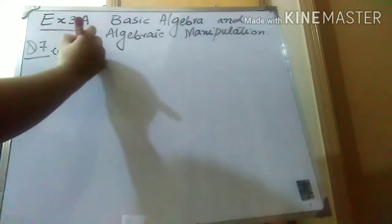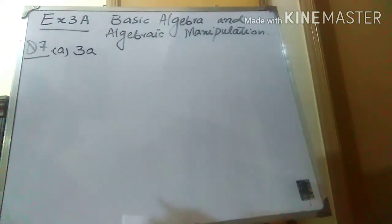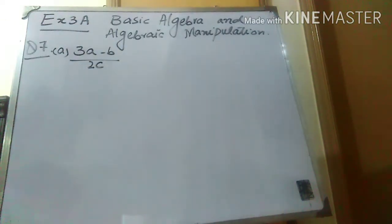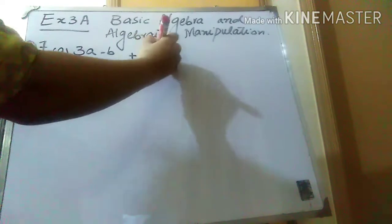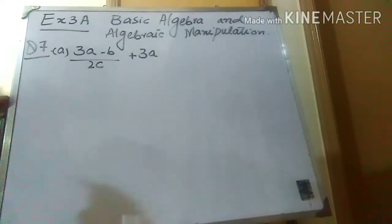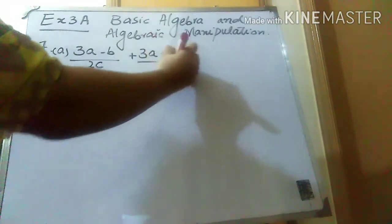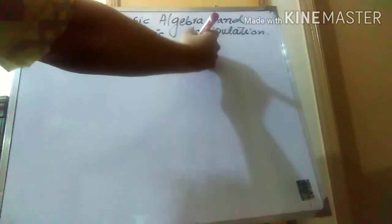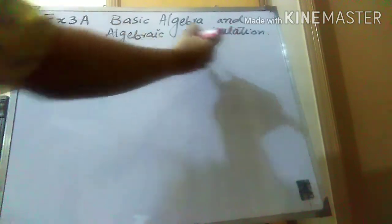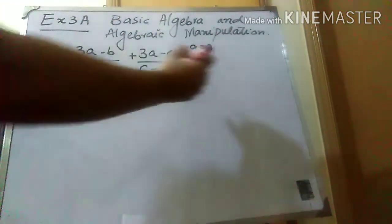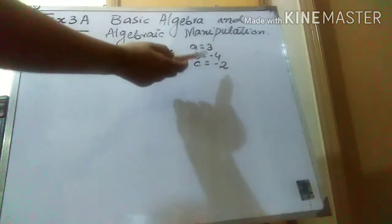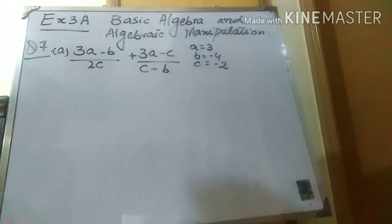The full expression for part a is: 3a minus b over 2c, plus 3a minus c over c minus b. The values of a, b, and c are given: a is equal to 3, b is equal to minus 4, and c is equal to minus 2. What you need to do is put these values into the expression to find out the answer.